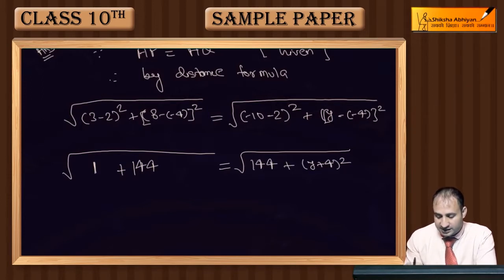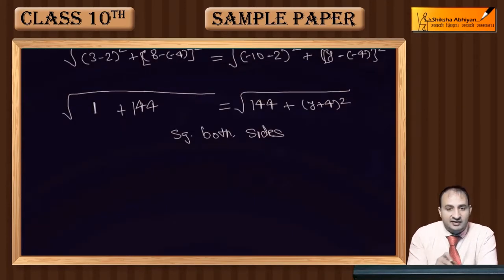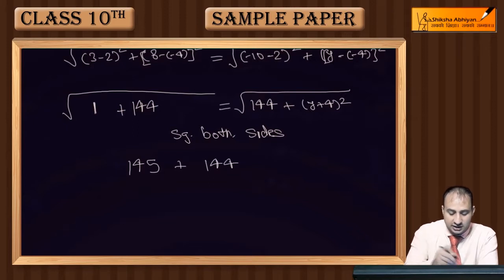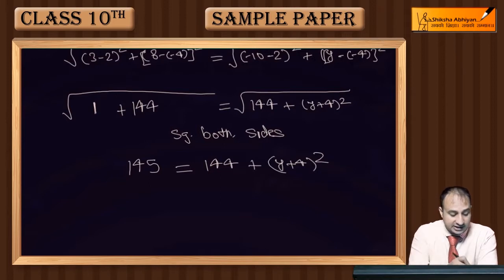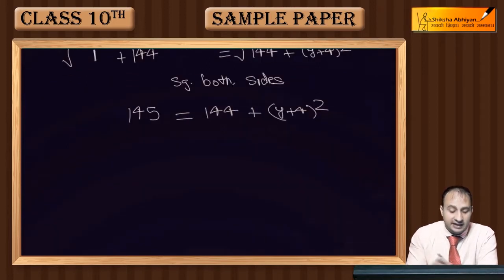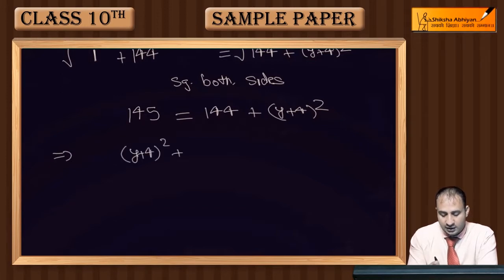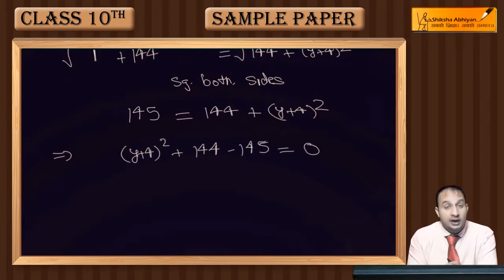Now squaring both sides — square roots remove ho jaayenge. Left pe milega 145, right pe milega 144 + (y+4)². Ab 145 ko right mein le jaate hain: (y+4)² + 144 − 145 = 0.